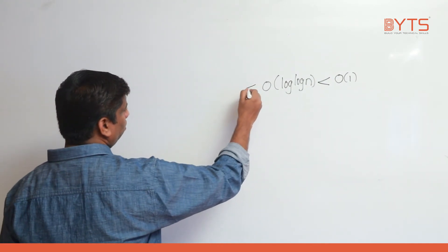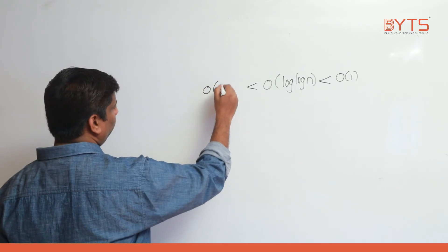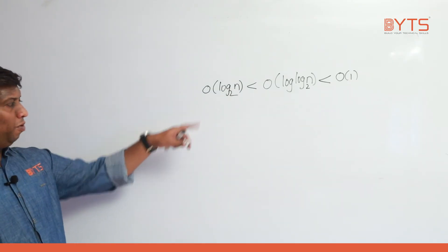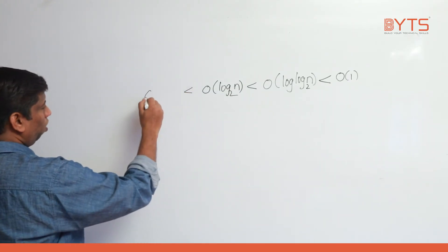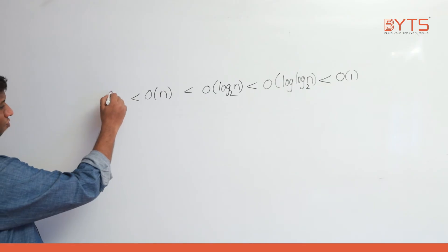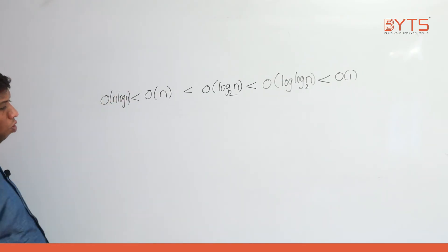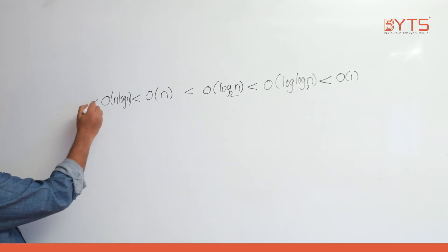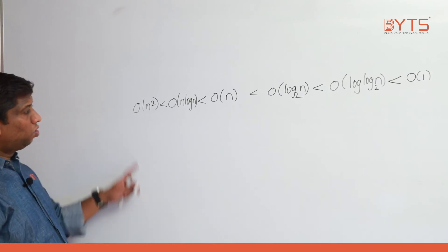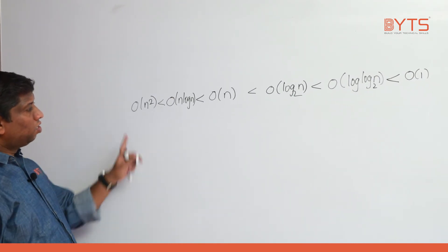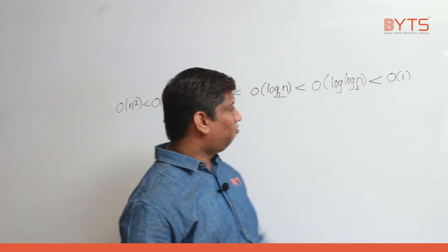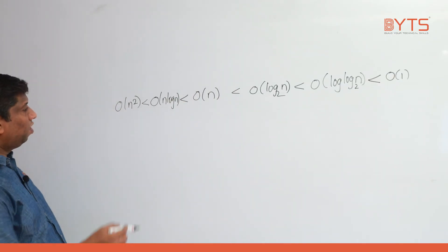After O of log log n comes O of log n, then O of root n, then O of n, then O of n log n, and then O of n square. So the order from fastest to slowest so far is: O(1), O(log log n), O(log n), O(√n), O(n), O(n log n), O(n²).